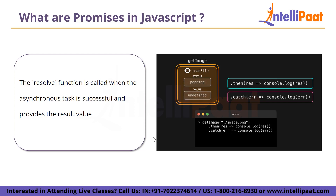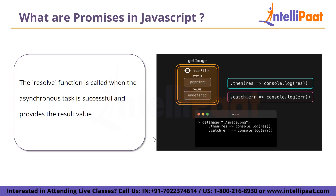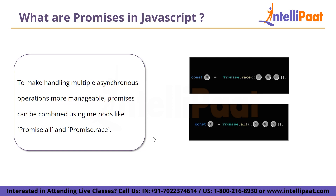The 'then' method is used to handle the fulfillment of a promise. It takes a callback function executed with the fulfillment value when the promise is resolved successfully, and returns a new promise allowing for chaining of multiple asynchronous operations. The 'catch' method takes a callback executed with the rejection reason when the promise is rejected, and also returns a promise enabling further chaining. Promises also offer the 'finally' method, which runs code regardless of whether the promise was fulfilled or rejected — useful for cleanup tasks.